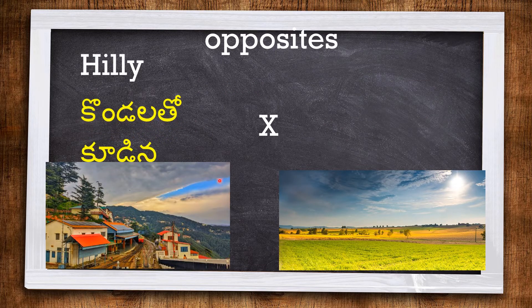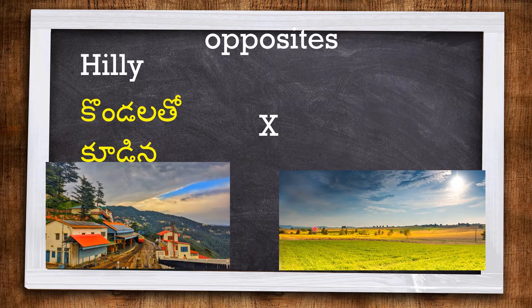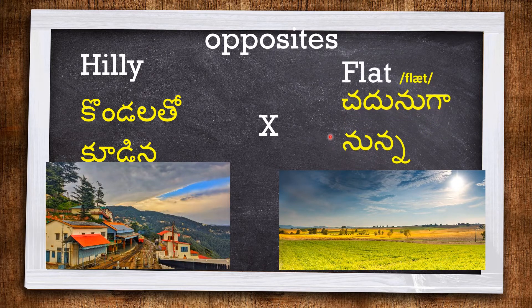Next one is HILLY — these houses are in a hilly area; they are constructed in a hilly station. And the opposite of HILLY is FLAT. This area is very flat.